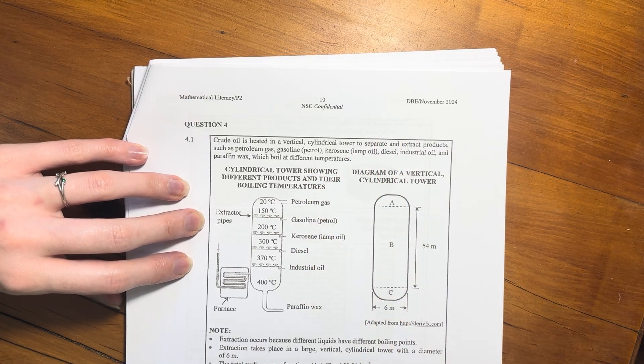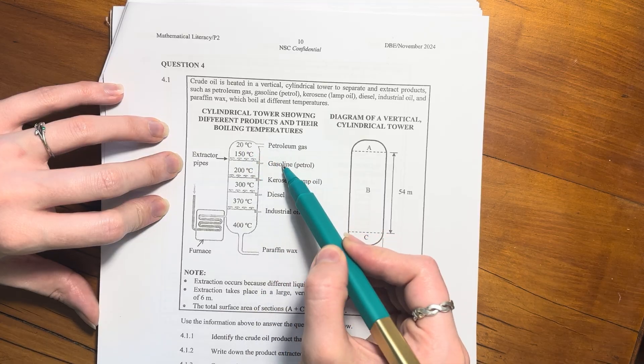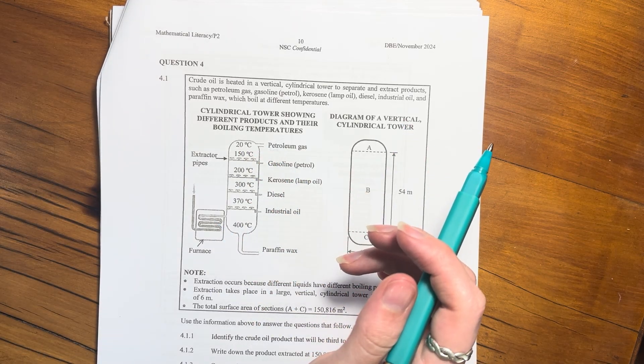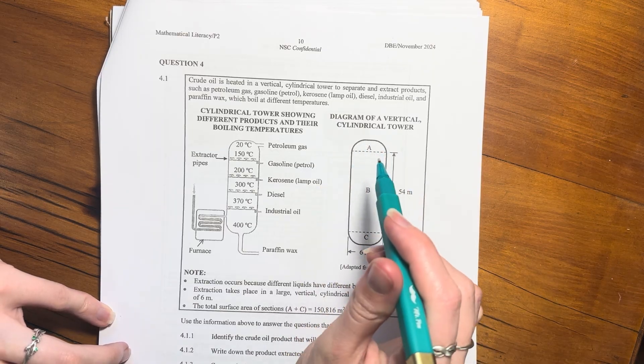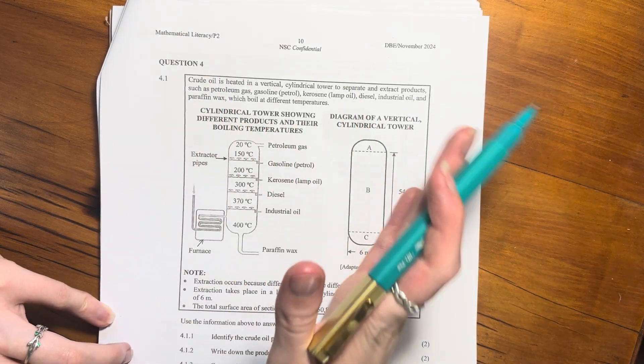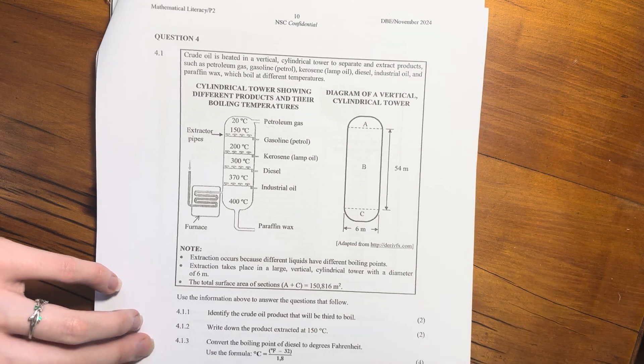They give us this picture and show the temperatures at which each product boils at. Then they show the diagram of the cylindrical tower. You're probably going to have to look at temperature and a bit of volume, but let's just do one thing at a time.